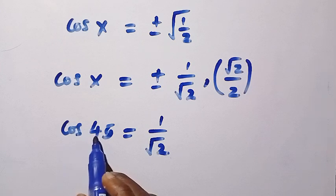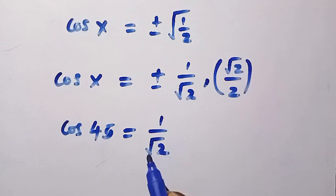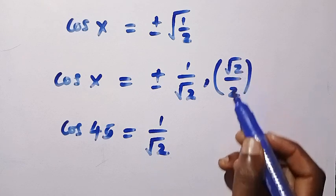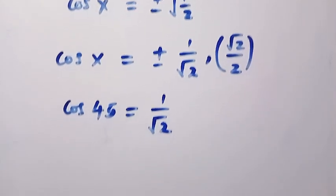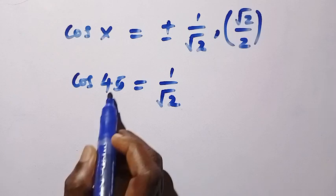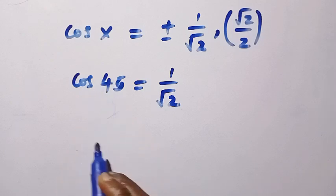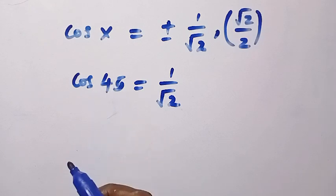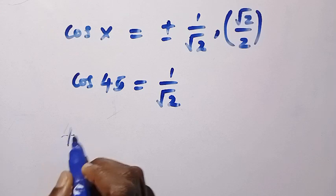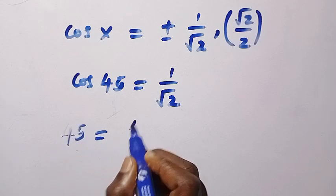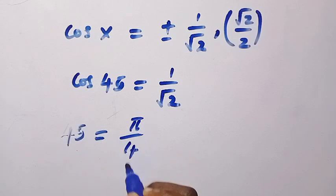If we plug in cos of minus 45, it gives us 1 divided by root 2, or we leave it as root 2 divided by 2. But let's write it in radians. So we have 45 here. The 45 is the same thing as pi divided by 4.